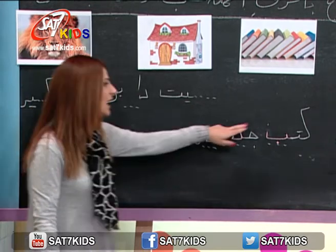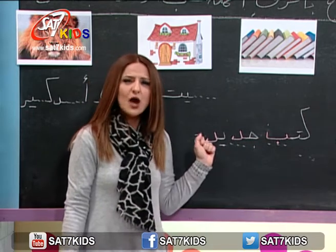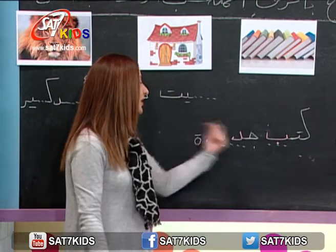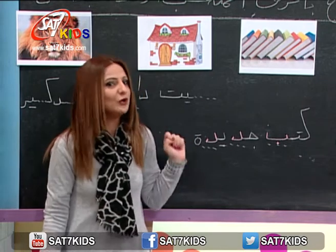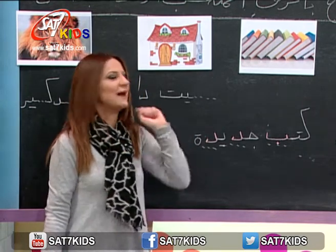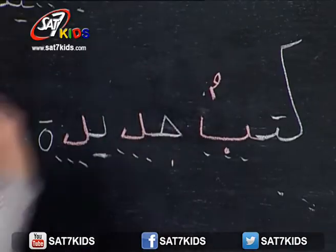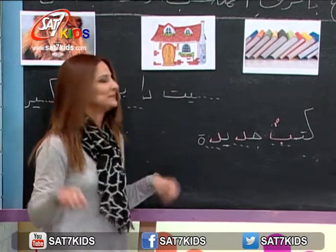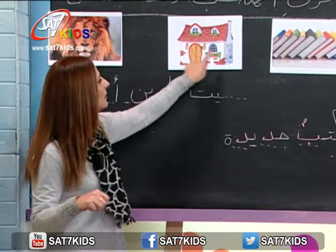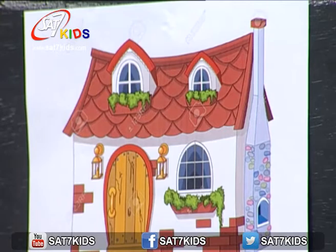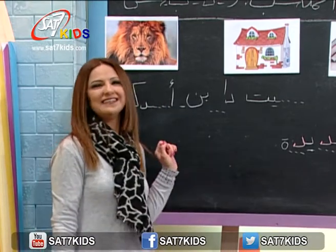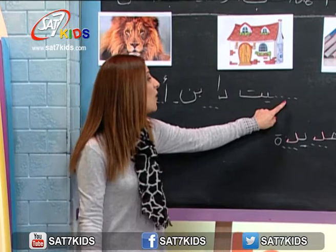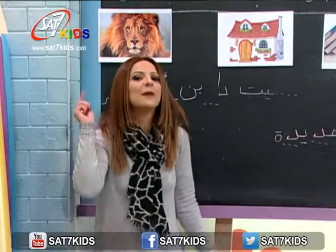إذا أنا بدي حط على كلمة كتب على حرف الباء صوت، بقدر حط التنوين: كتبٌ. نرجع بعدين نحكي عنها أكتر. خلينا نكمل: في عنا هون بيت. هيدا بيت لبنة اسمها دارين. شو اسمها؟ دارين. في عندي بكلمة بيت أول حرف ناقص.